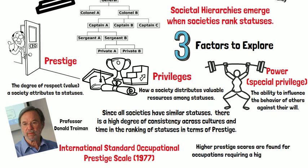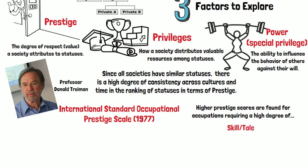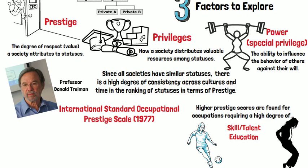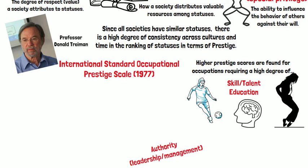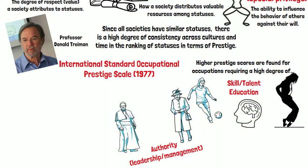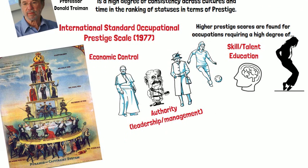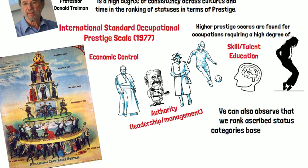Higher prestige scores are found for occupations requiring a high degree of skill, talent, or education. We also find higher prestige scores for occupations requiring a high degree of authority — including leadership and management — and for occupations requiring a high degree of economic control. We can also observe that we rank ascribed status categories based on prestige.